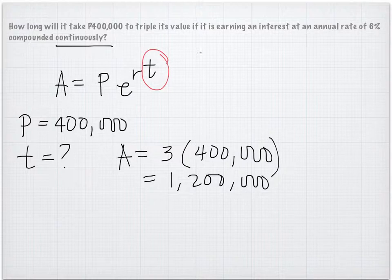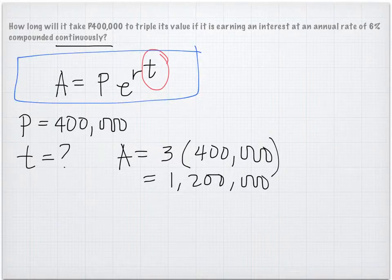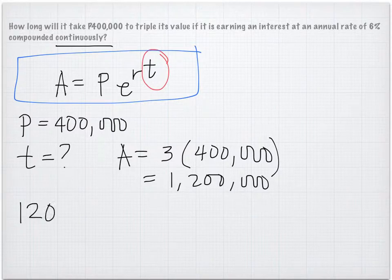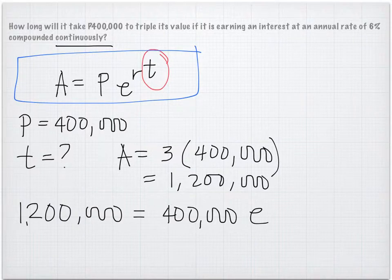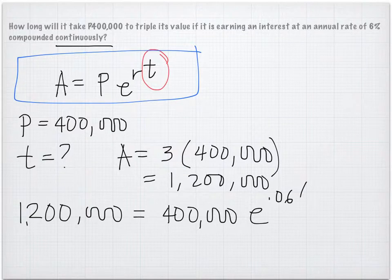Using the formula, when the amount is 1,200,000, the principal is the same, 400,000, then e, then the rate is at 6%, so times 0.06, and then we want to find the missing time.